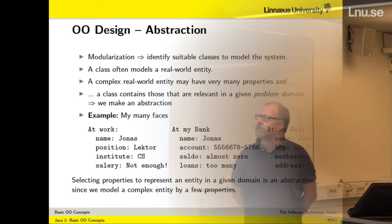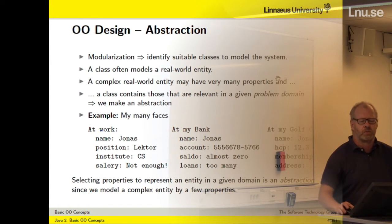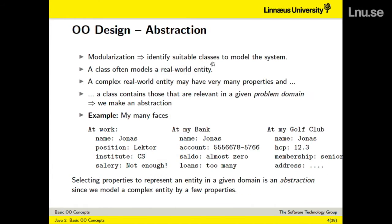Another keyword is abstraction. Modularization is about identifying suitable classes to model the system. However, classes should model a real-world entity, but real-world entities are often very complex. Take the student example: if I should model you in all your details, it would be very messy. I would practically have to have your complete DNA together with all your memories and experiences — it will be a hopeless task. Modeling a real-world entity in detail is of course impossible.